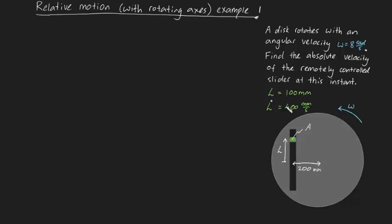We know it's constrained to move inside of this slot, and we know the disk itself is rotating. We're given some information about L, and we're given some dimensions, and we know that omega is acting in the counterclockwise direction. This should be all you need to solve for the absolute velocity of point A. So have a shot of yourself first, and then come back when you're done.